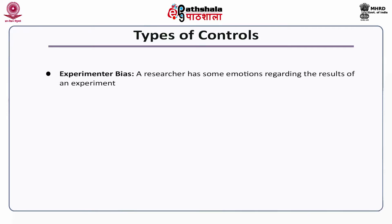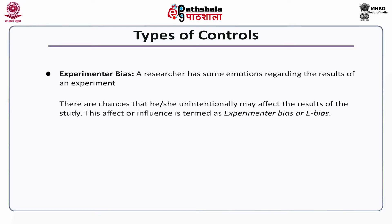Third type of control is experimental bias. A researcher has some emotions regarding the results of an experiment, and there are chances that he or she may unintentionally affect the results of the study. This effect or influence is termed as experimental bias or e-bias. It can be controlled by appointing a specialist or expert to conduct the trials — this process is known as blind control, meaning a researcher who is not informed about the objective and expectations of the study is not likely to create biasness.